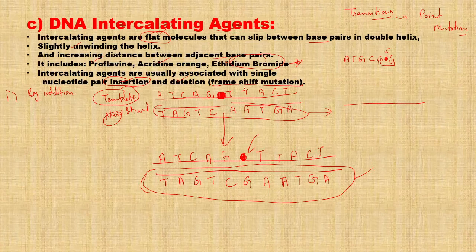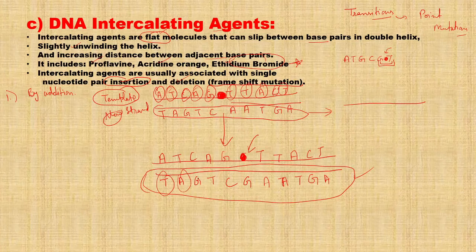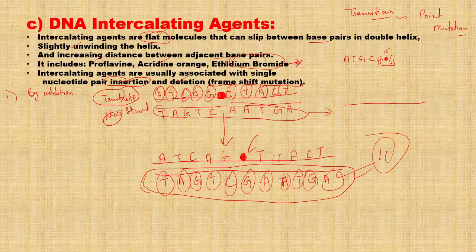You can count here: initially we had 10 nitrogenous bases. But in the new mutated strand, we now count 11 nitrogenous bases — one extra base has been added due to the intercalating agent inserting itself and causing DNA polymerase to incorporate an additional base during replication.